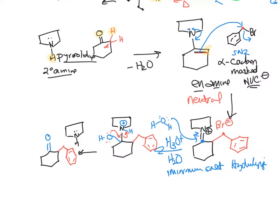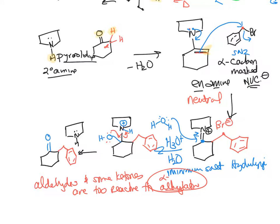Now why would you want to do this? Because in reality, aldehydes and some ketones are too reactive for alkylation, for alpha alkylation. So one of the ways to do this is to mask with a secondary amine, and then you are able to generate the alpha carbon nucleophile through this protected enamine.